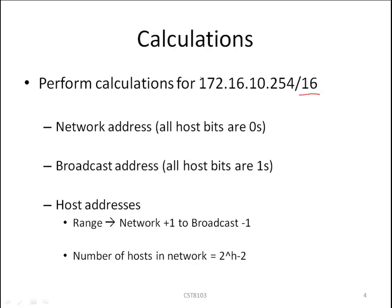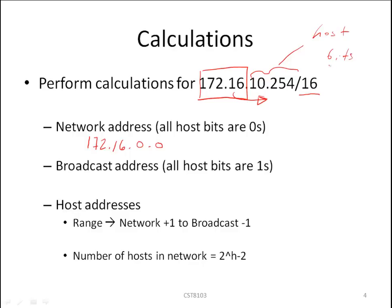A slash 16 indicates that the first two octets, or the first 16 bits, represent the network portion of the address and are constant — they never change. Therefore our network address will be 172.16, and with all host bits being zero it would be .0.0. These two octets represent our host bits, and host bits having a value of 0 gives us zero.